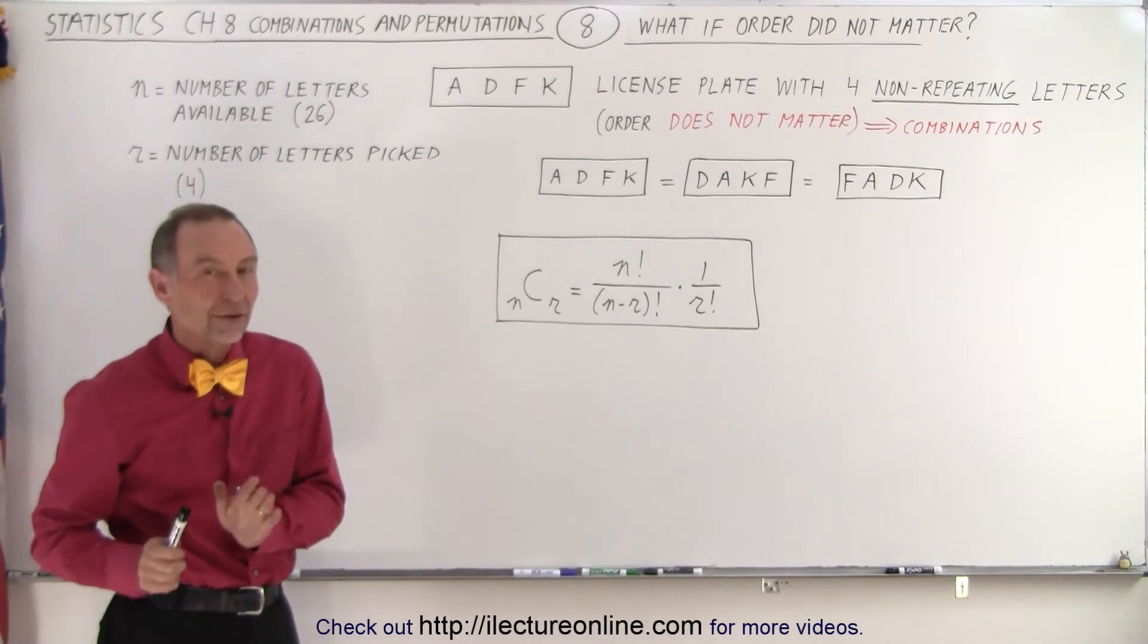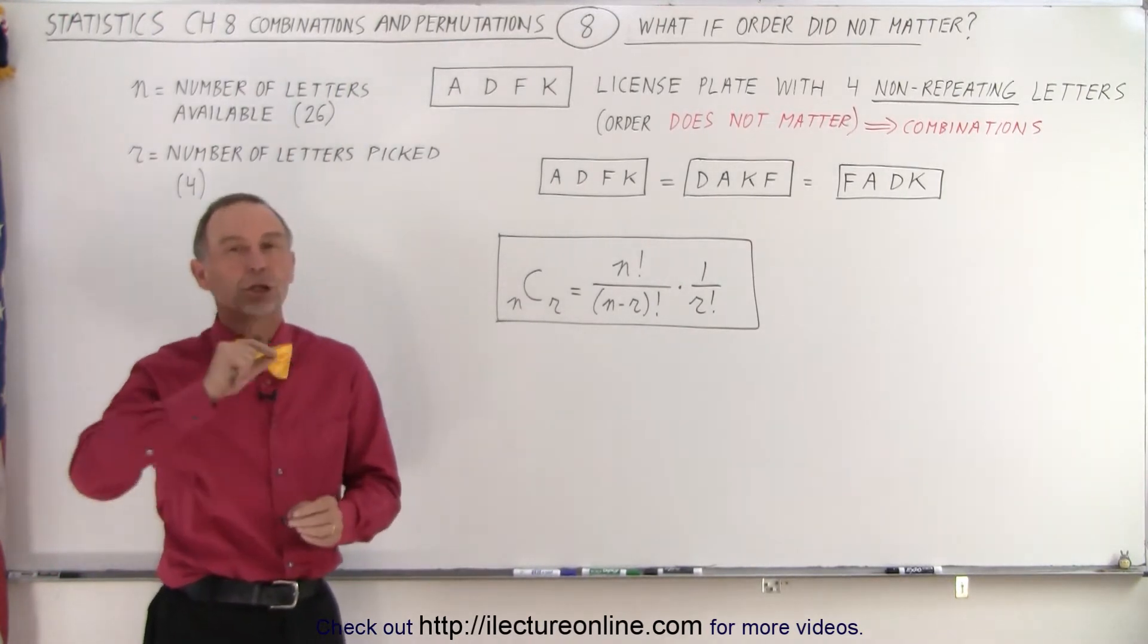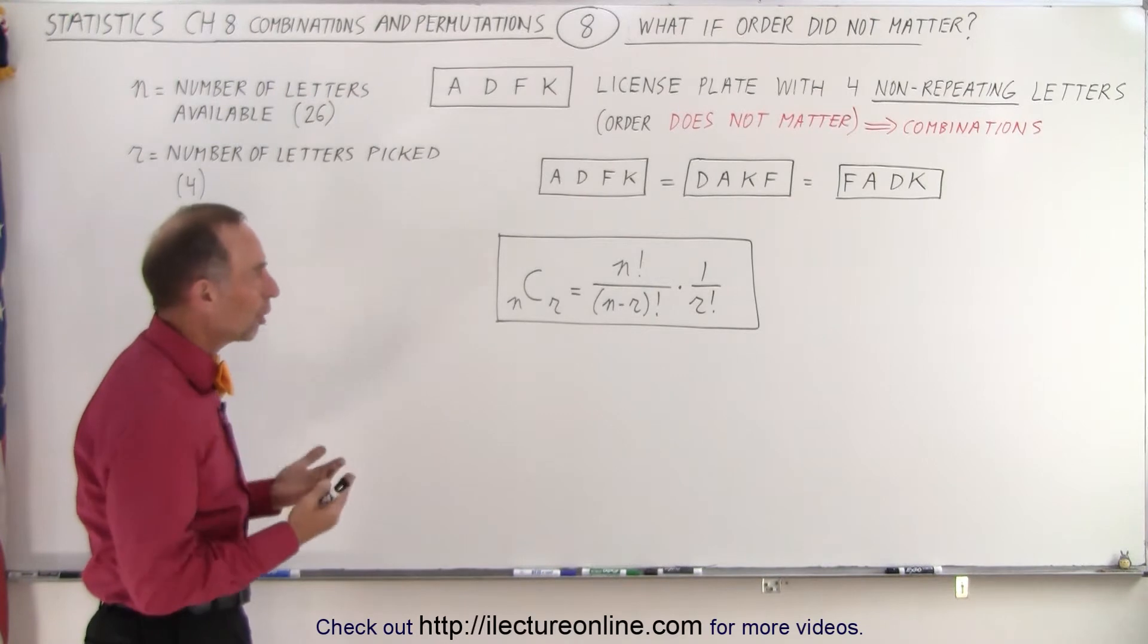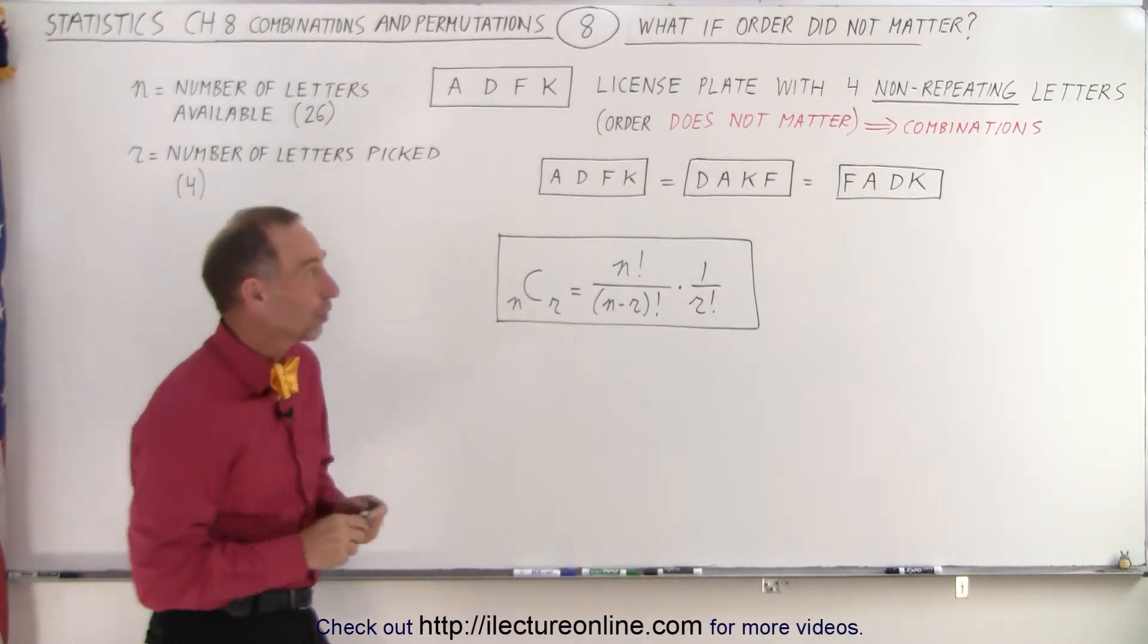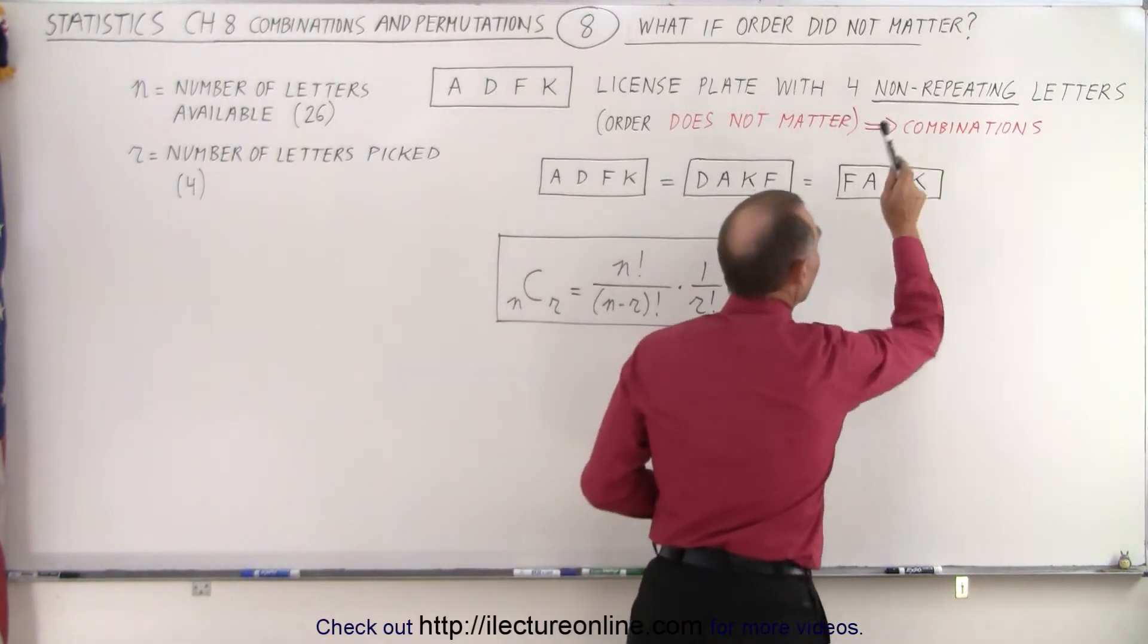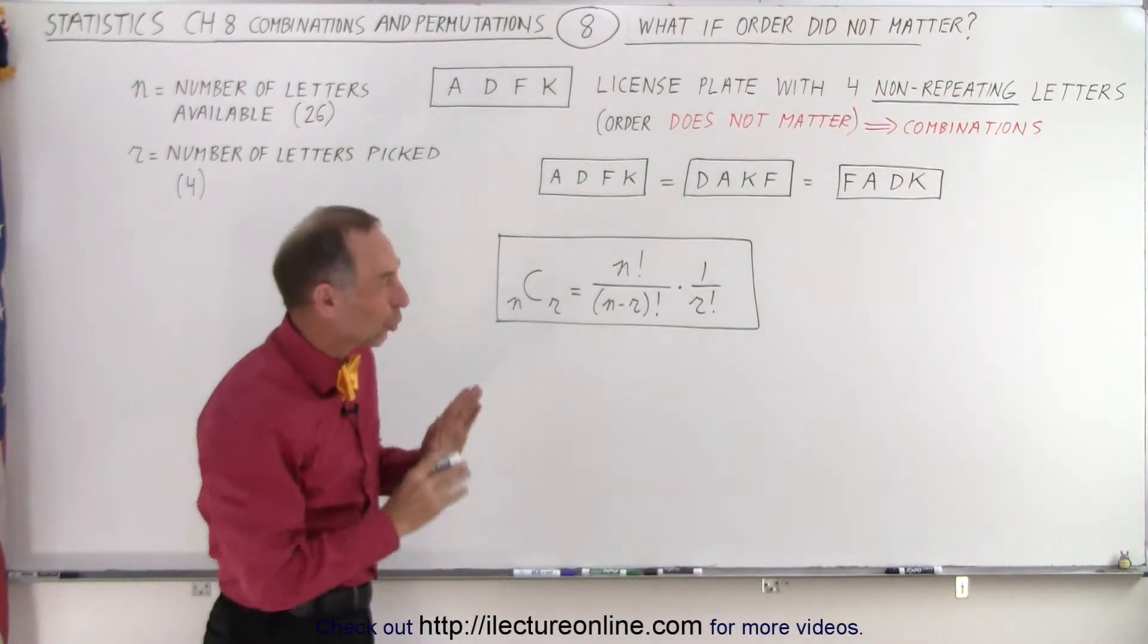And since order doesn't matter, instead of looking for permutations, we're now looking for combinations, the total number of combinations for a four-character license plate. And also keep in mind that still non-repeating letters. That way this equation will work. So we've seen this equation before.